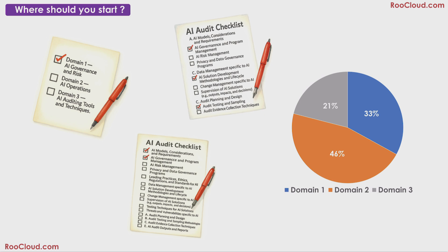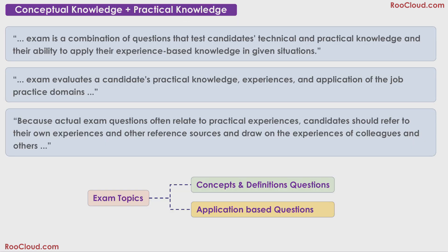While the order of the domains doesn't matter, the order of the topics within each domain does matter, because there is a logical flow. So you can start with any domain, but you should at least read through all the topics of that domain before moving on to the next one. It is also very important that you keep attempting the questions for each topic, so that you can be sure that you are prepared to answer both concept-based and application-based questions. This point is also repeated several times in the manual, stressing on experience-based knowledge, practical knowledge, experience and application.